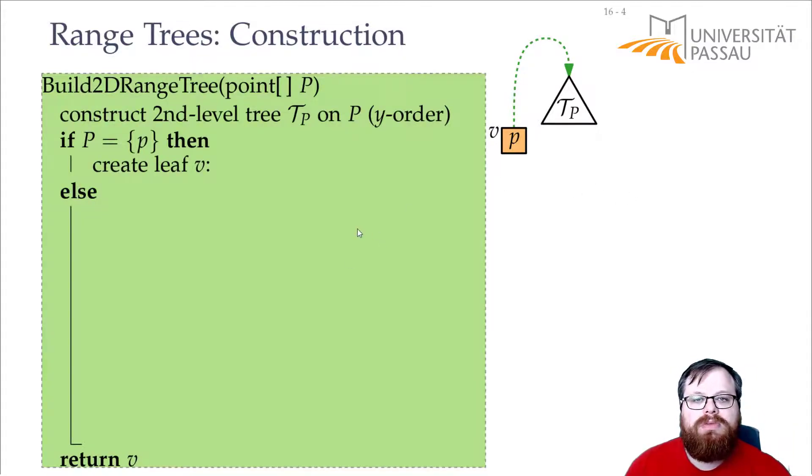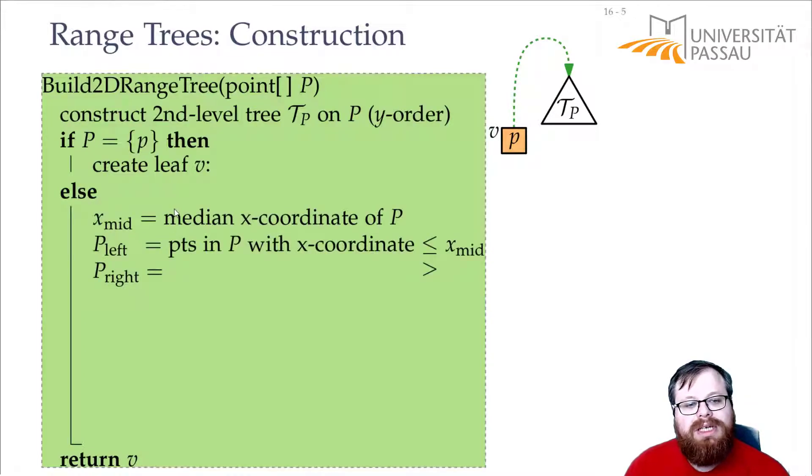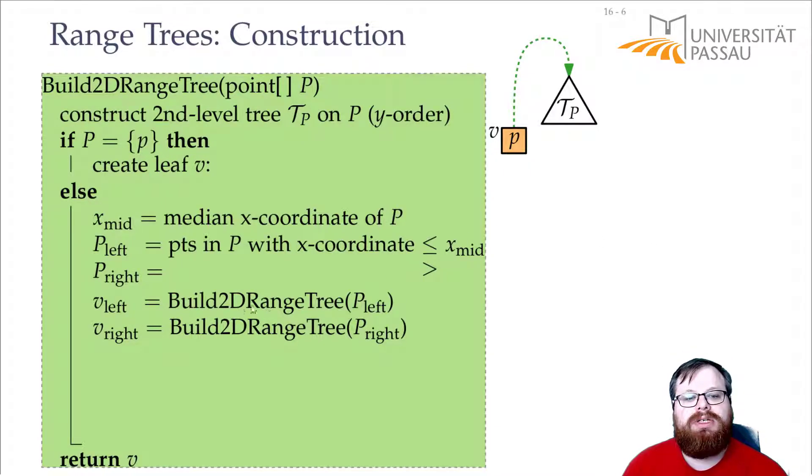Otherwise, if we have more than two points in the recursion left, then we do something very similar to before. We find the median, the median x-coordinate of our points. We get our set p left and p right. Those that lie to the left or on it and those that lie to the right. And we build recursively the 2d range tree of these two point sets.